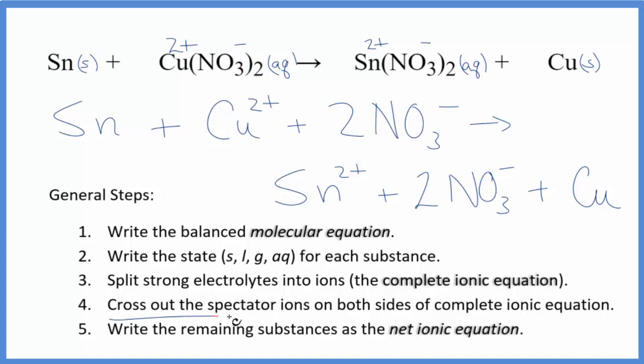Now we can cross out spectator ions. Spectator ions, they're on both sides of the complete ionic equation. They haven't changed, so we're really not interested in them. Here I can see I have tin, tin 2 plus. Those are different. Copper 2 plus, the copper 2 ion, copper. Those are different. But these nitrates, they're exactly the same. They are the spectator ions. So we're going to cross those out.